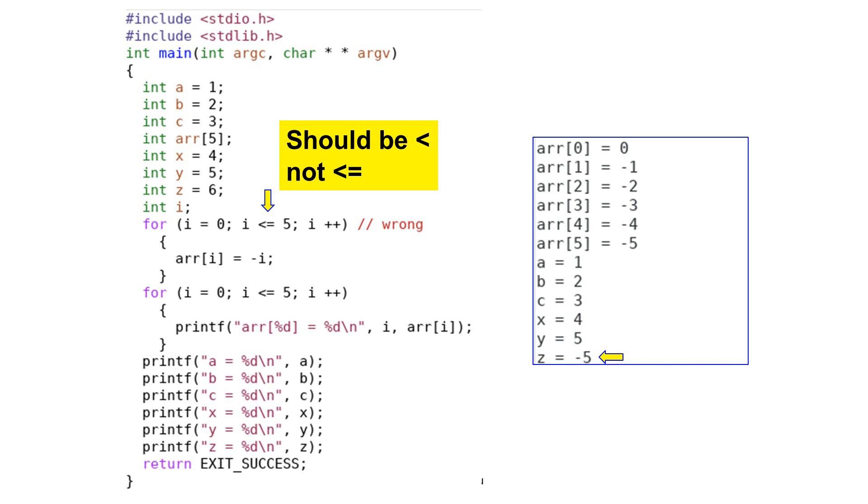The program even prints minus 5 even though 5 is not a valid index. When we print the values of a, b, c, they are correct: 1, 2, and 3. When we print the values of x and y, their values are also correct, 4 and 5. When we print the value of z, however, its value should be 6, but the value has been changed to minus 5. The incorrect array index changes the value of z.